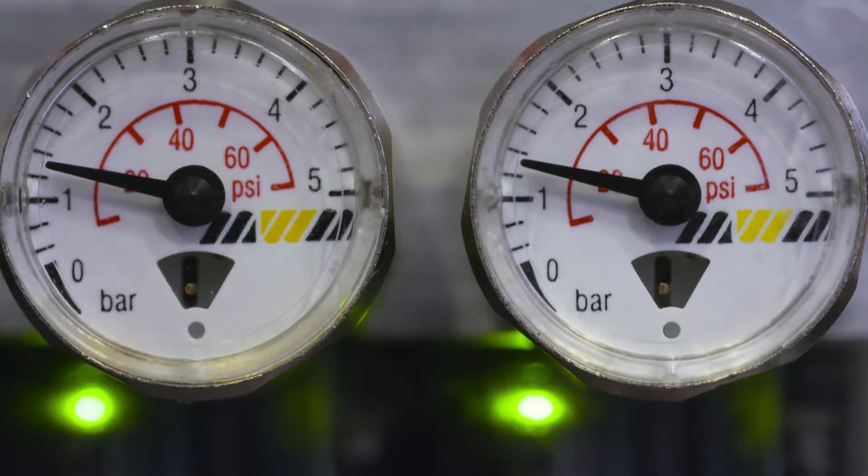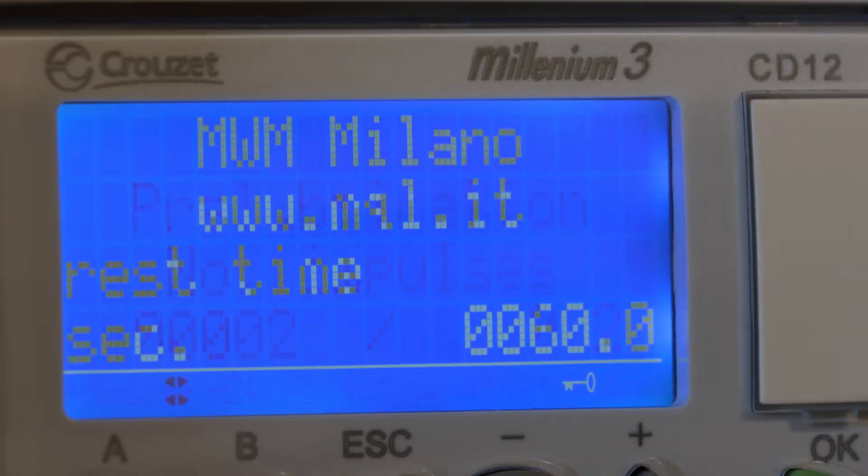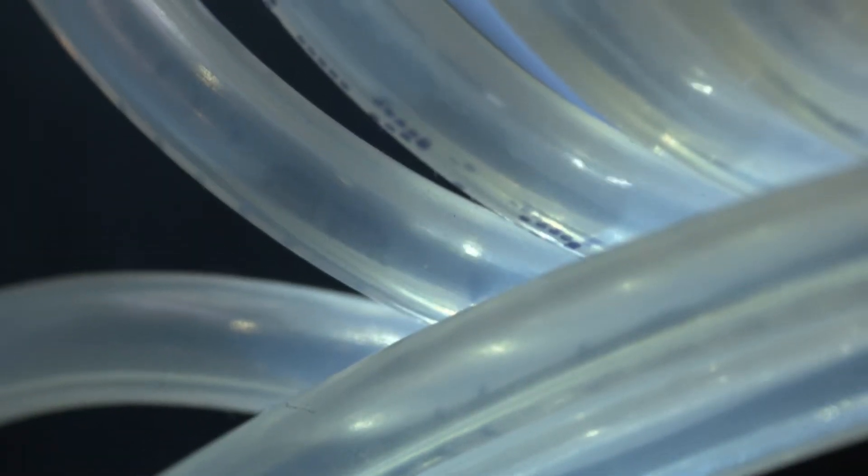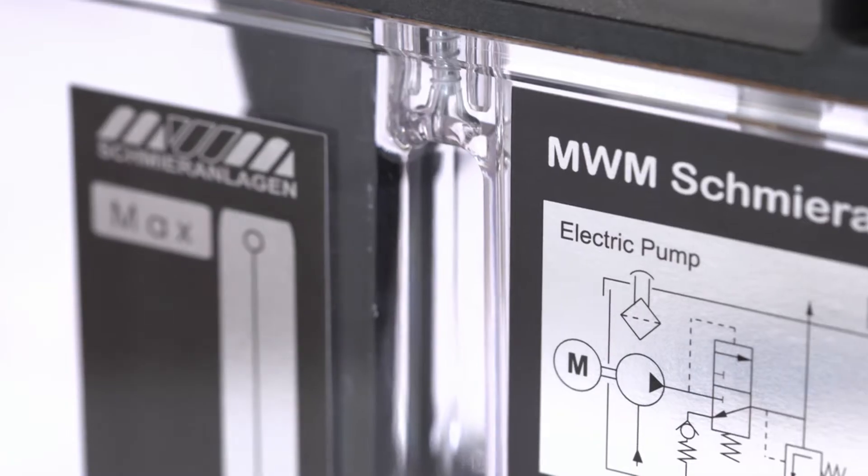We work with micro flow rates by using volumes of just hundredths of a milliliter per hour distributed constantly and continuously. For example, a flow of about three drops of oil per hour.